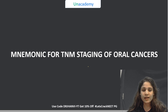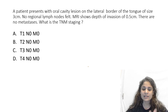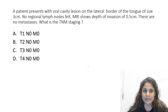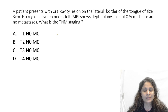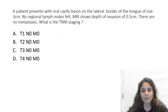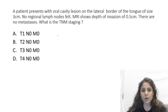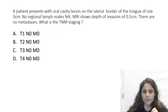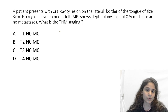Now let's begin the mnemonics for TNM staging of oral cancers. This is the typical question that will come for your exam. They will ask you something like: a patient presents with an oral cavity lesion on the lateral border of the tongue of size 3 cm. No regional lymph nodes are felt. MRI shows depth of invasion of 0.5 cm. There are no metastasis. What is the TNM staging? It is a very confusing question.